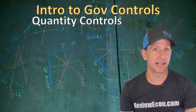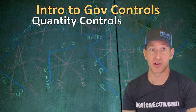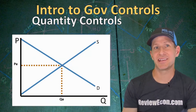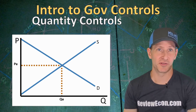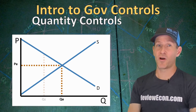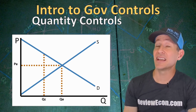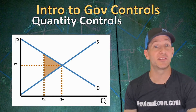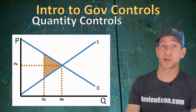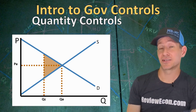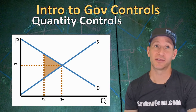First we're going to take a look at quantity controls. A quantity control is when the government establishes a specific amount of production within the market. Here we have a competitive market at equilibrium with the equilibrium price of PE and the equilibrium quantity of QE. If the government mandates a quantity QC that is less than the equilibrium quantity, the underproduction within this market is going to lead to that triangle of deadweight loss. That underproduction creates inefficiency, and you can calculate the value of the deadweight loss by calculating the area of that triangle if there were numbers.